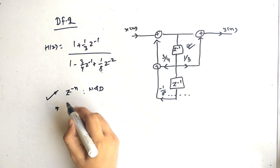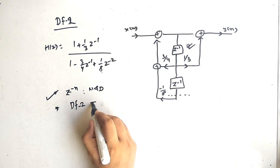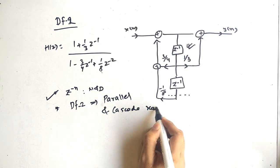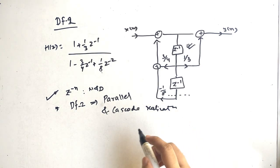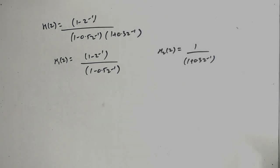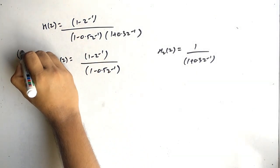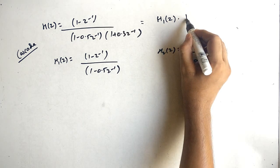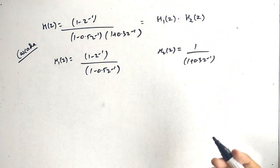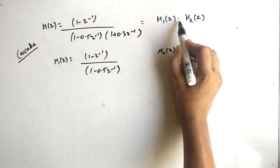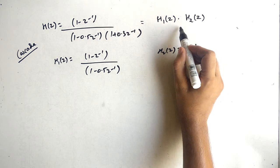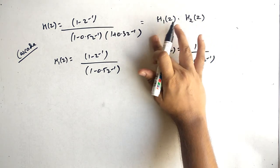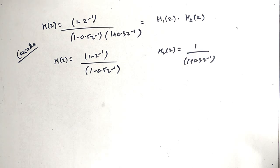You should note that direct form 2 is used in both parallel and cascade realization. Now let's talk about cascade and parallel. Cascade means multiplying two H of Z together. For parallel realization, instead of multiplication, we add the H of Z terms. That is the basic difference between cascade and parallel.